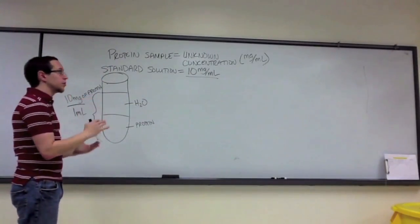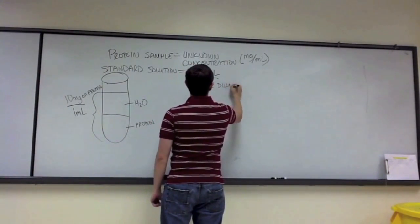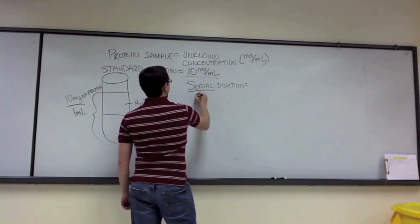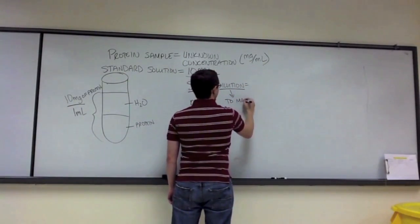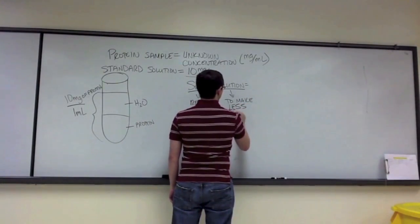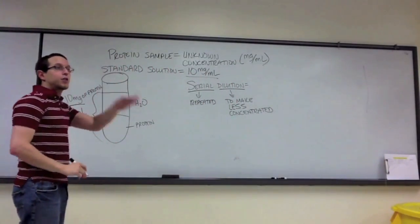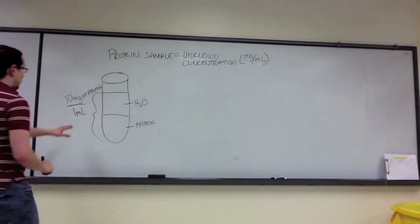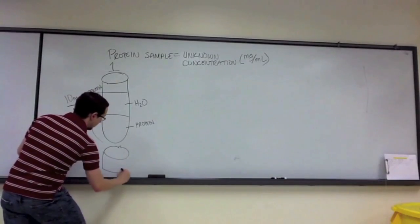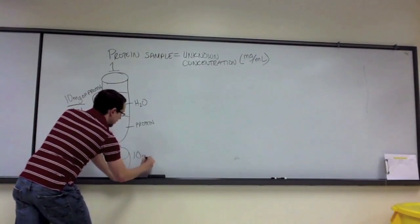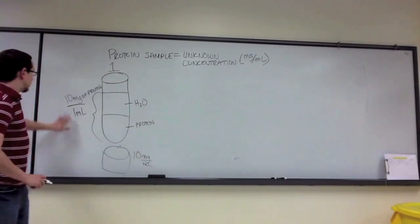We're going to do a serial dilution. Thinking about that term: serial means repeated, and to dilute something means to make it less concentrated. So we're going to see the concentration of our solution decrease with each dilution. This initial solution in tube one came from a beaker containing my standard solution at 10 milligrams per milliliter, meaning for every 1 milliliter of solution there are 10 milligrams of protein.